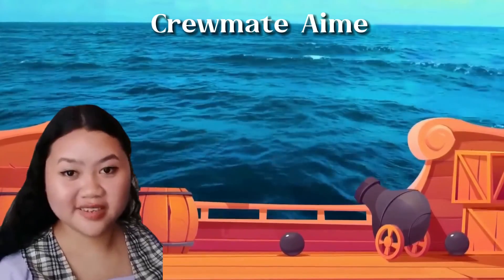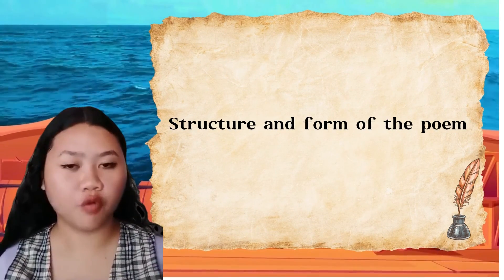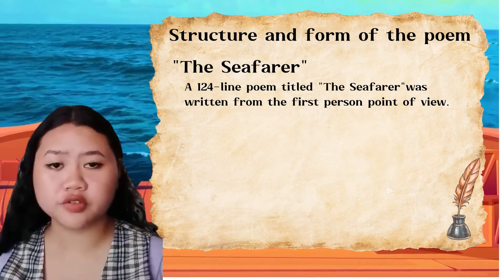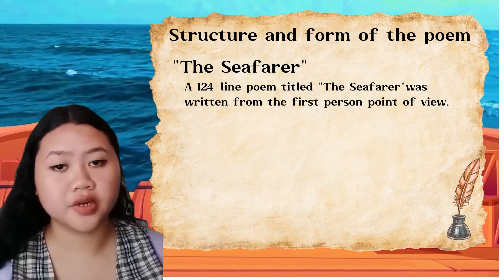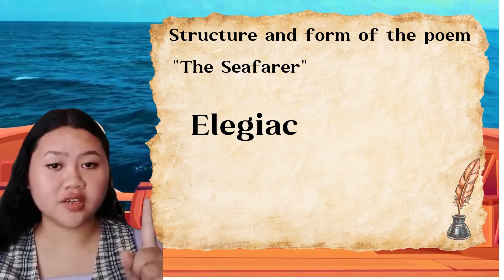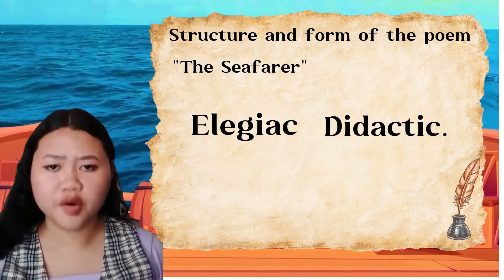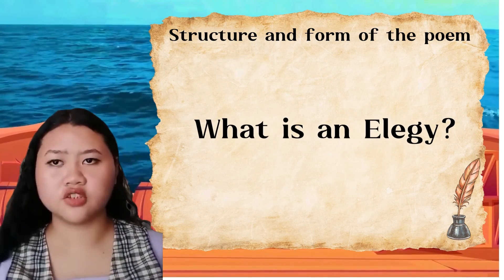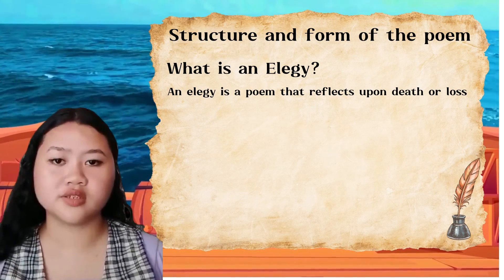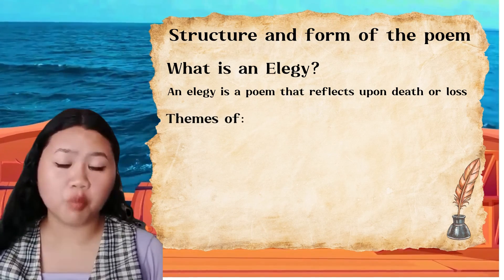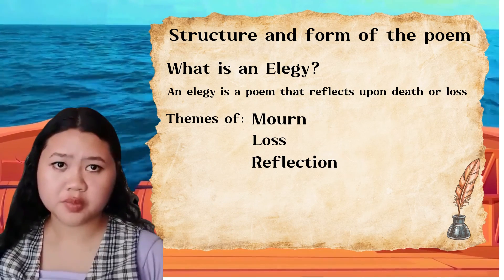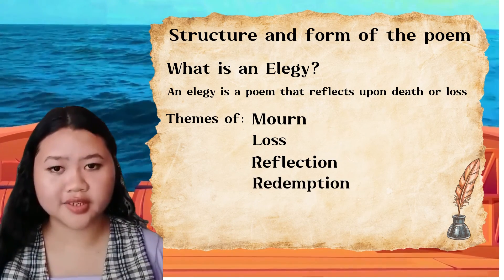Ahoy, mateys. I am Crewmate Aimee, discussing the structures and forms of the poem. The Seafarer is a poem written from the first person's point of view. There are two sections: the first is an elegy, and the second is didactic. An elegy is a poem that reflects upon death or loss. Traditionally, it contains themes of mourning, loss, and reflection. However, it can also explore themes of redemption and consolation.